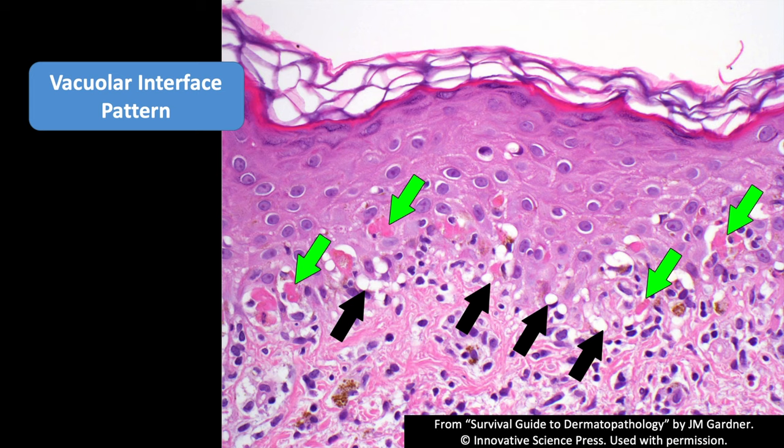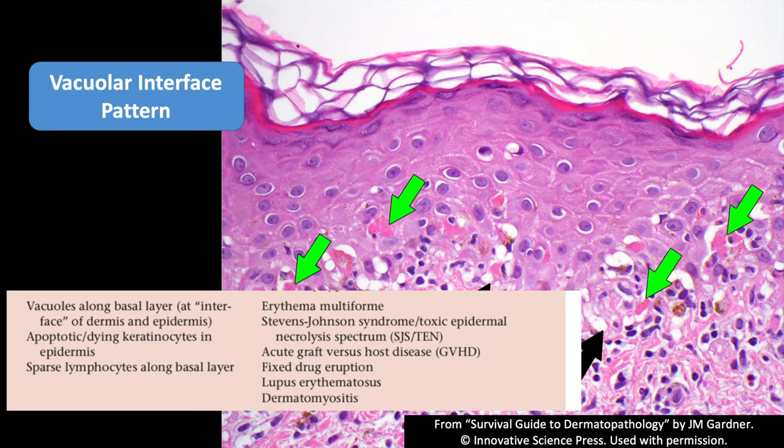This is a very robust example. Sometimes it's much more sparse and subtle, and you may only have some focal dying keratinocytes and little bubbles. Just keep that in mind — you can go to higher power and look if you're thinking there might be interface change. Finding this is really helpful because there are diseases that tend to have interface change and others that really don't, so it can help narrow down the differential diagnosis.